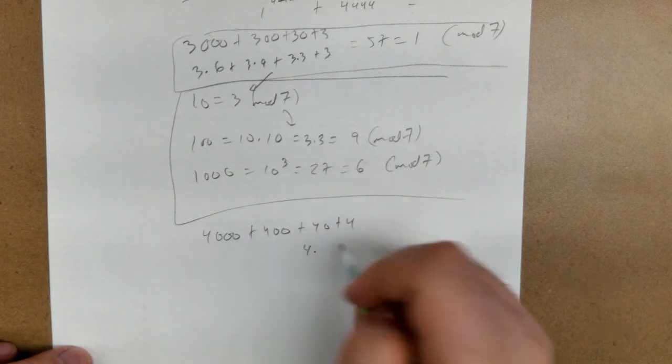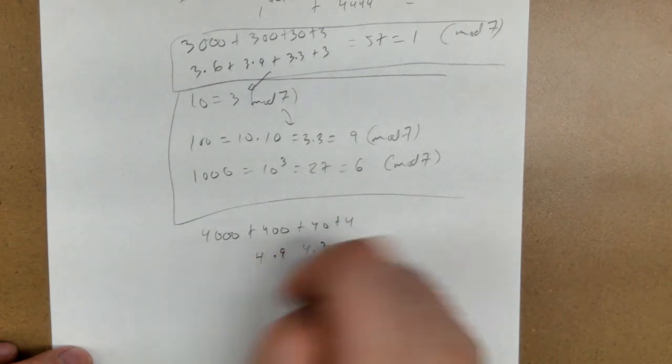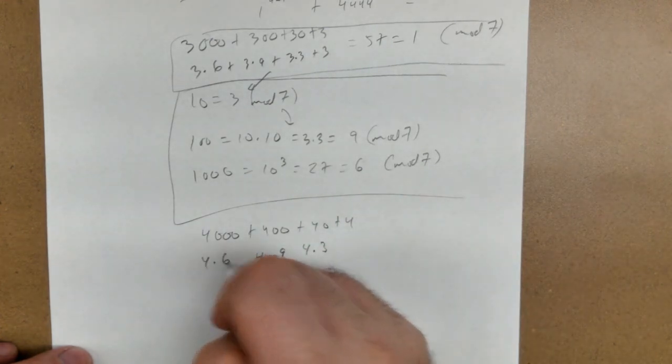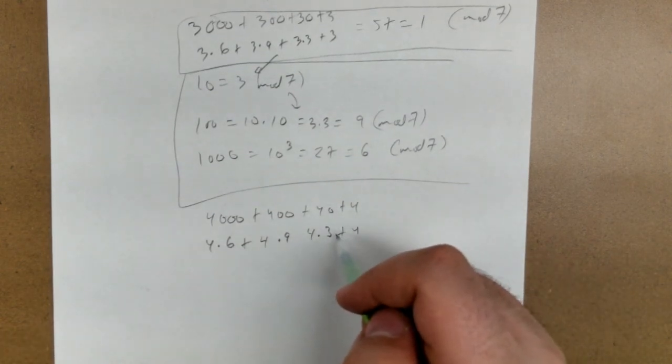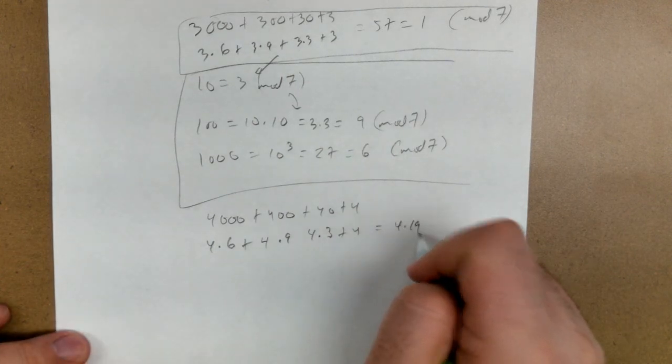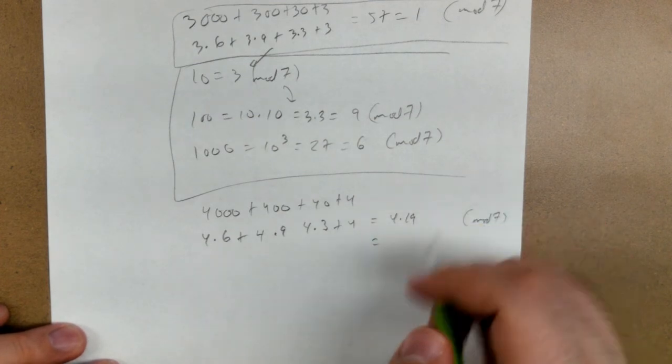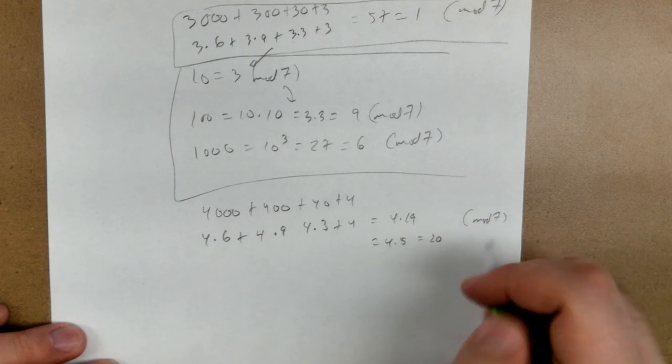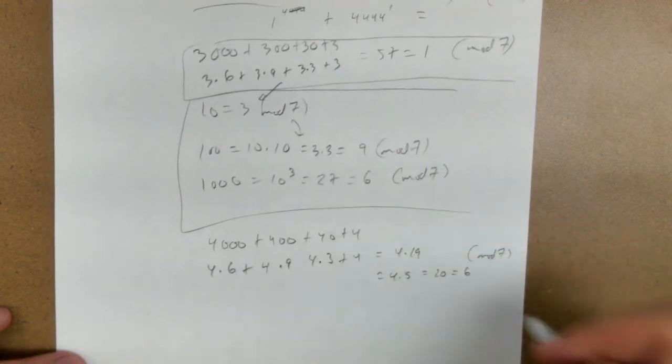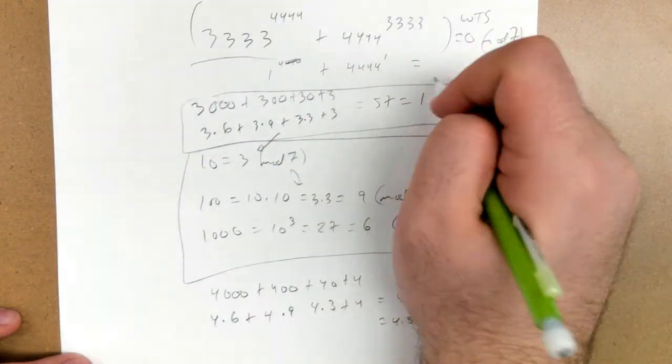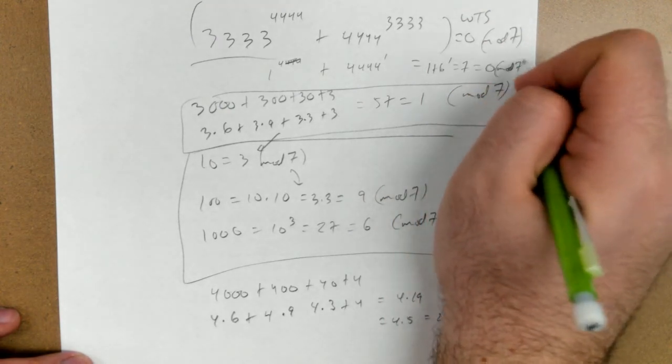So 4444, I can do the same trick. This is 4 times, we said 10 was 3, we said that 100 was the same as 9, and we said that 1000 was the same as 6. So if I add these up, how many copies of 4 is that? 19. So it's 4 times 19. And mod 7, 19 is the same thing as 5. So 4 times 5, that's 20, and that would be 6 mod 7. Okay, so if that whole base is the same thing as 6, this is 1 plus 6 to the 1, which is 7. And mod 7, that is 0, and we're done.